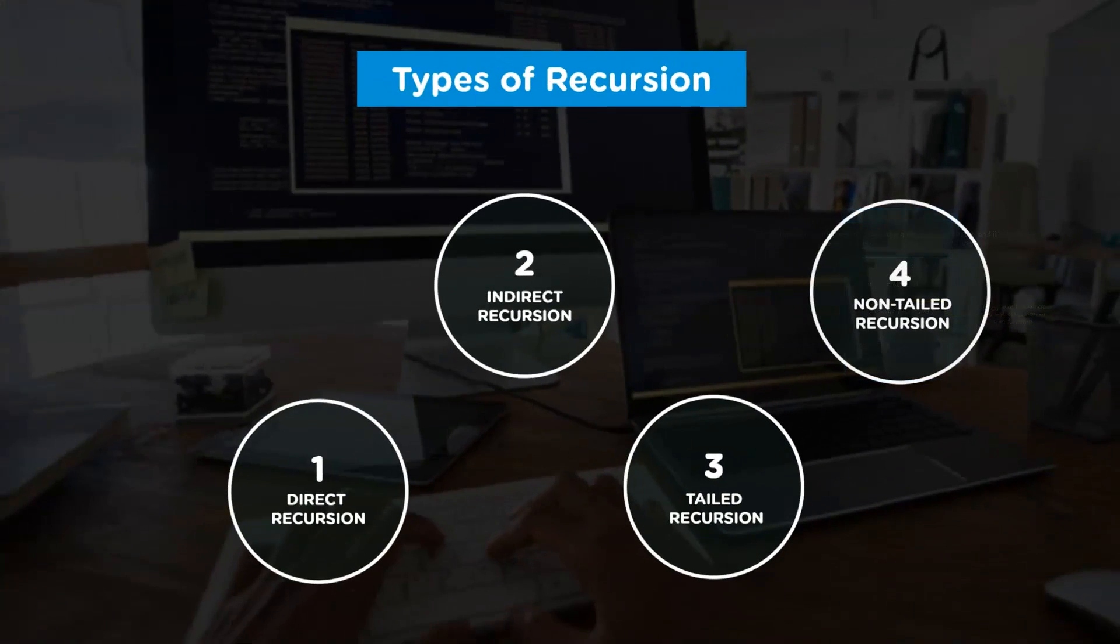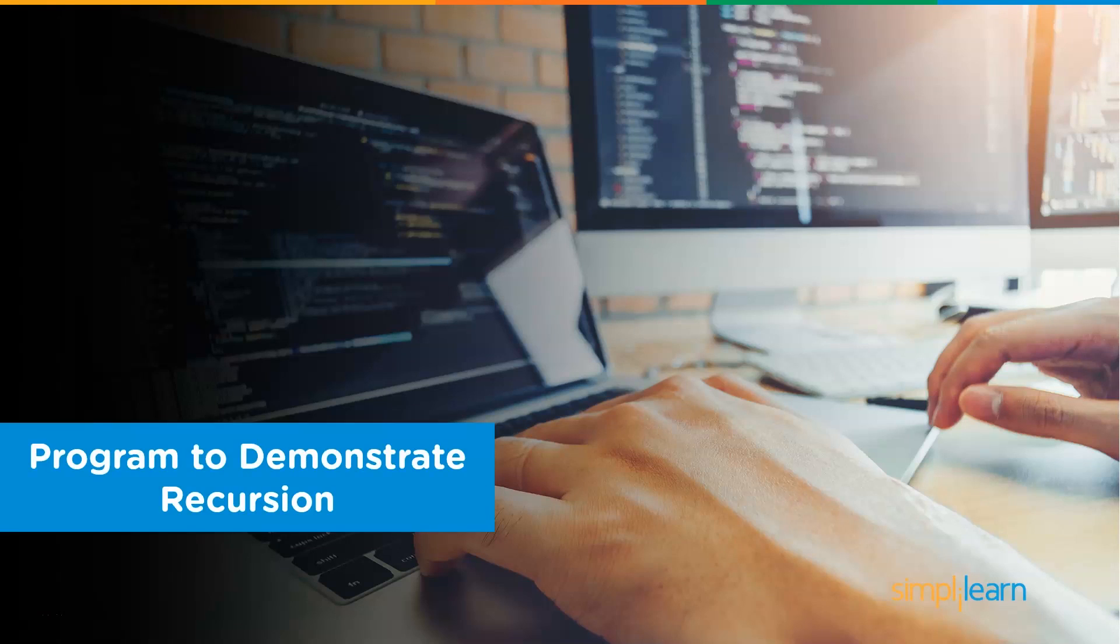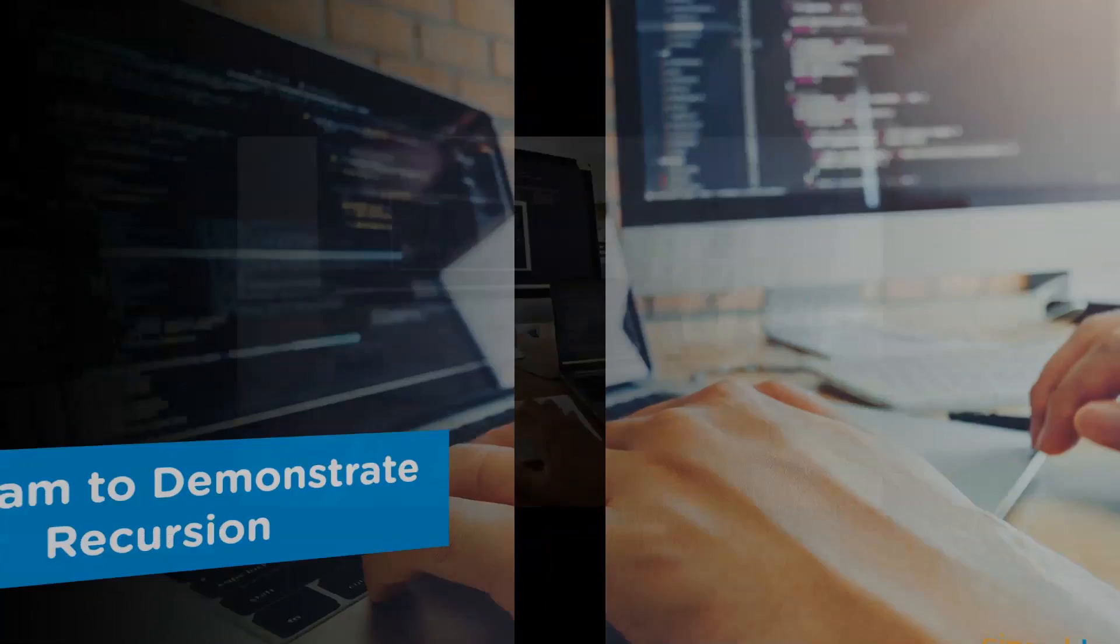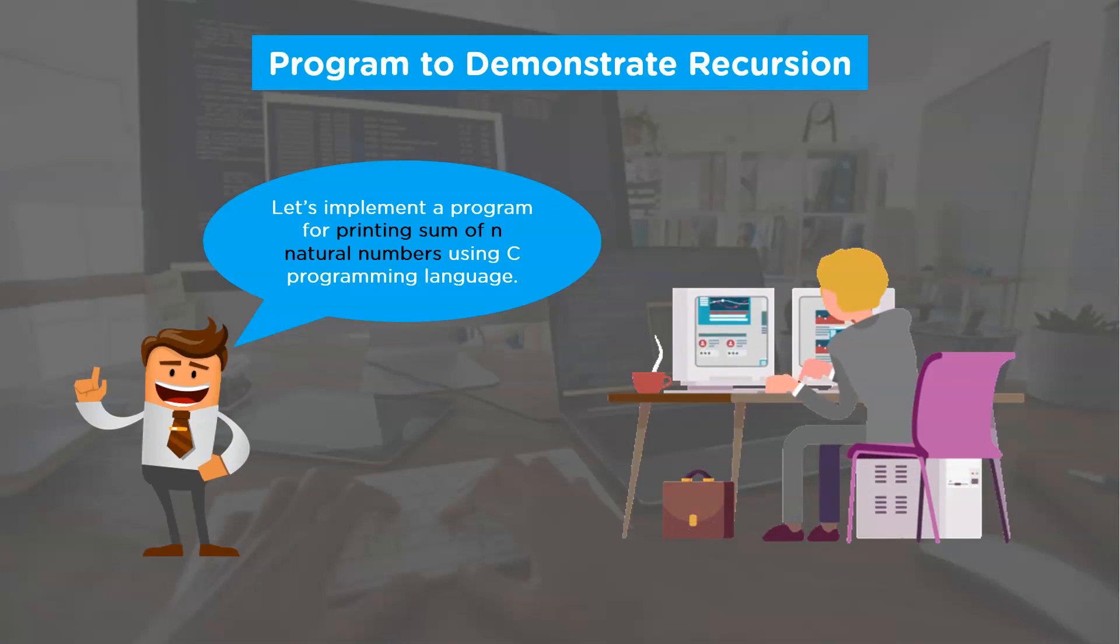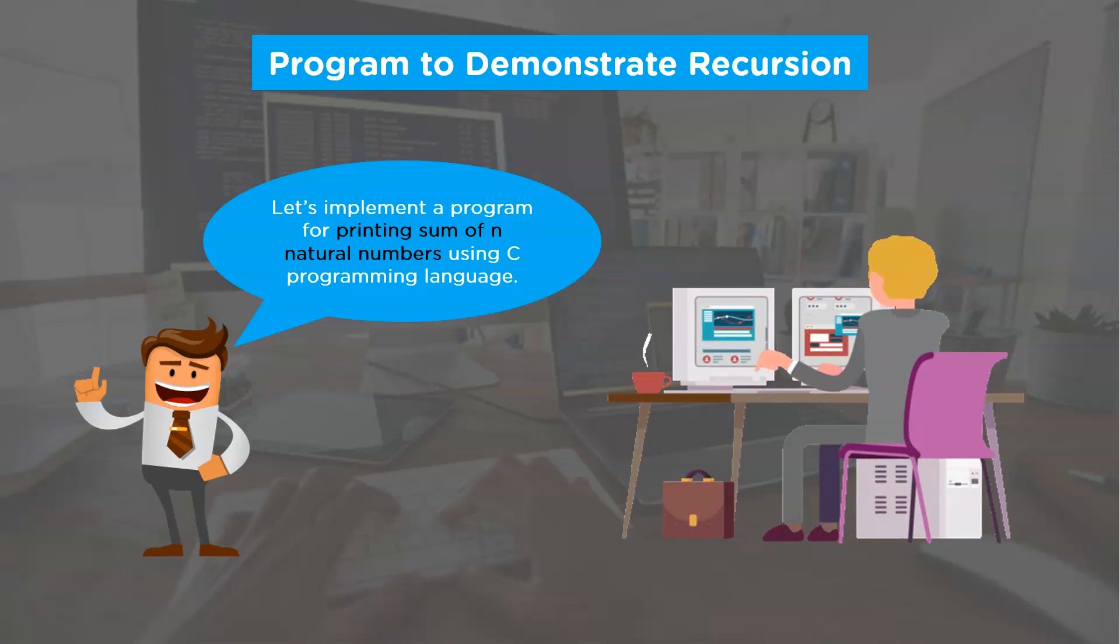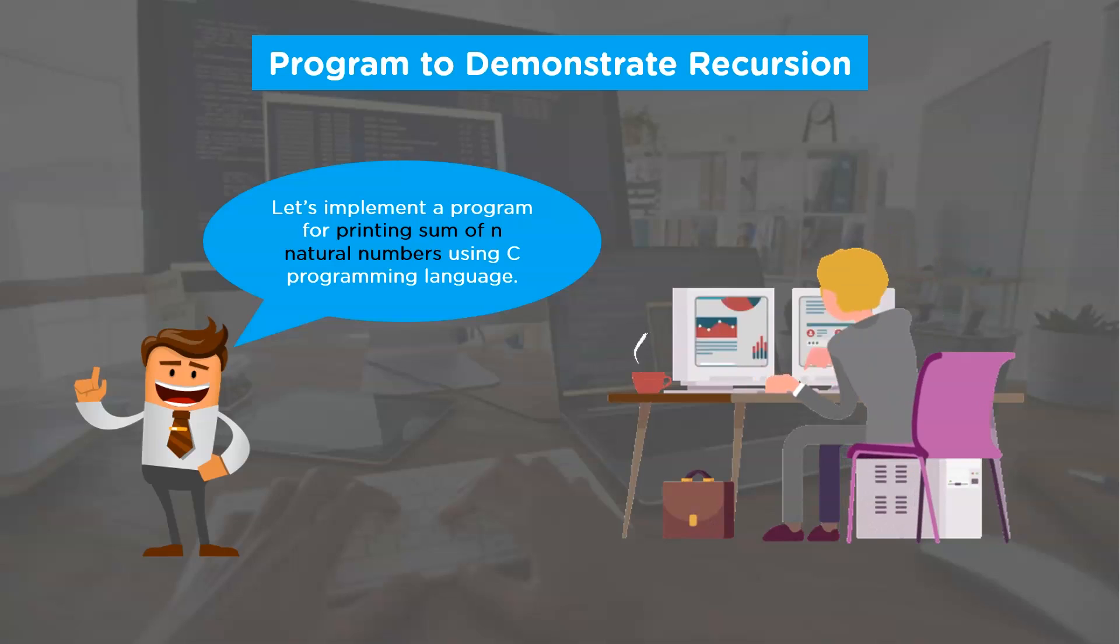Now finally, let's implement a program to demonstrate the recursion. The program that we're going to implement is solution to the problem statement that we discussed earlier. According to that problem statement, we have to calculate the sum of n natural numbers given the number n. Now in order to address this problem, we're going to use C programming language. So without any further ado, let's head over to the code editor.